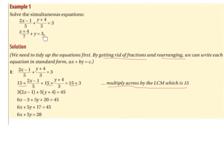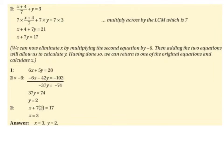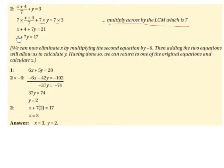Now applying the same process to the second equation: (x plus 4) over 7 plus y equals 3. The only denominator is 7, so the LCM is 7. Multiplying across by 7: 7 times (x plus 4) over 7 plus 7 times y equals 7 times 3. The 7s cancel leaving x plus 4, then 7y, equals 21. Bringing the 4 over gives minus 4, and 21 minus 4 is 17, so x plus 7y equals 17.